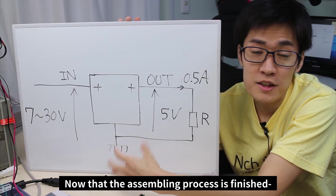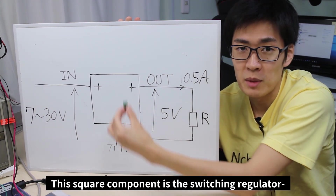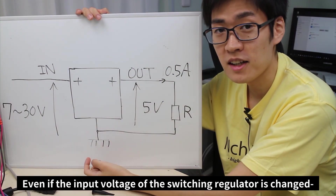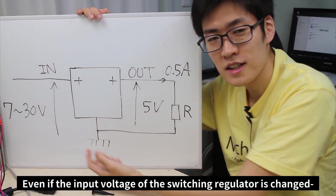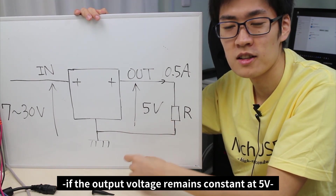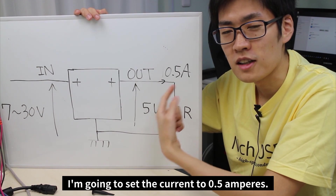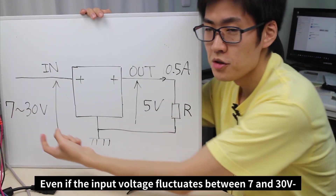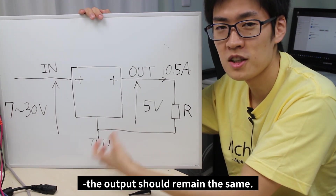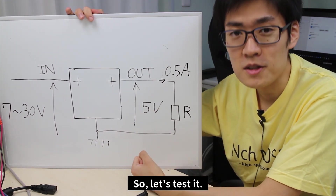Now that we've finished the assembly, we need to test if it works properly. This square on the diagram is the switching regulator we just assembled. Even if the input voltage fluctuates, as long as the output voltage remains constant at 5 volts, it means the regulator is working properly. I'm going to set the current to 0.5 amperes — even if the input voltage fluctuates between 7 and 30 volts, the output should remain the same. Let's go ahead and test it.